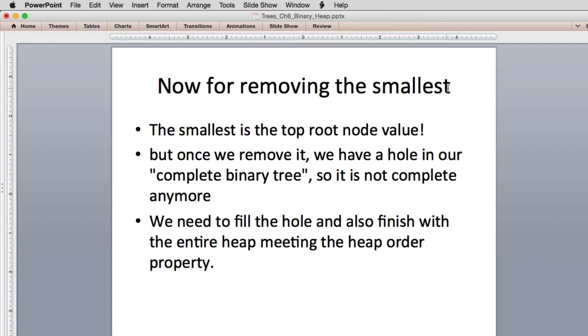Now removing the smallest, we're going to find out is similar. The smallest when we delete min is the one at the top of the list. So we're going to remove the root node and return it. That's going to be the smallest value. Once we remove it, we're going to have a hole in our complete binary tree. So it's not complete anymore.